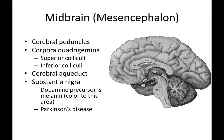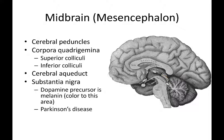The corpora quadrigemina is a group of four bumps on the posterior side of the brain. In a sagittal section you're only seeing two on the right, and there are two on the left to make a total of four. The best way to view the corpora quadrigemina is from a posterior view, with the cerebellum removed so we can more clearly see them.